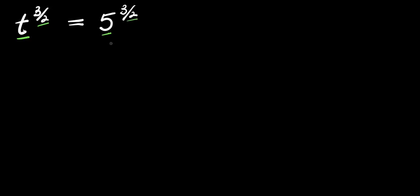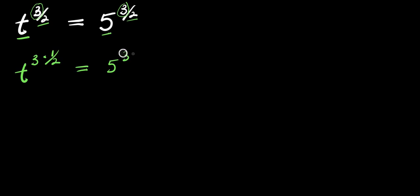We can start by factoring out the 3 in the exponent on both sides, so we have t to the power of 3 times 1/2, and this equals 5 to the power of 3 times 1/2.